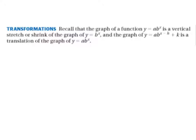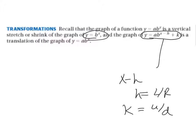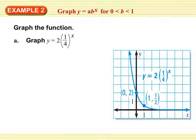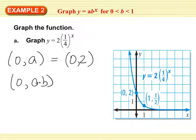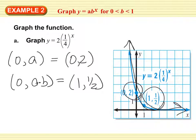So transformation with the decay shouldn't be too difficult. Recall that the graph of the function y equals a, b to the x is a vertical stretch or shrink of the graph y equals b to the x. And the graph y equals a, b to the x minus h plus k is a translation. Remember? You have x minus h. So h is your left right shift. And then k is your up down shift.